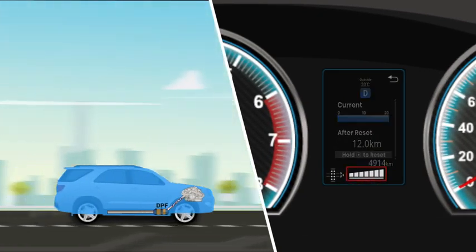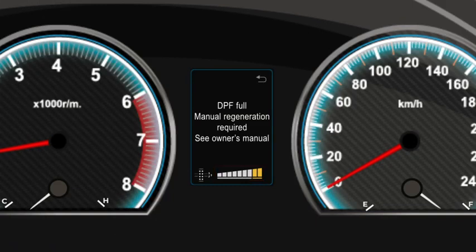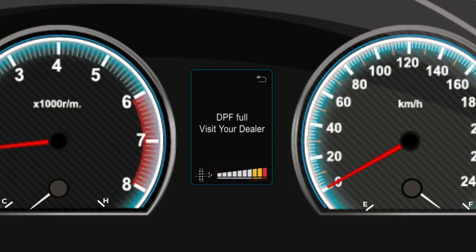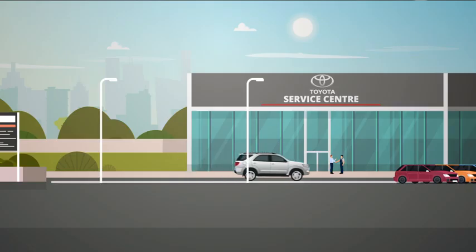If the number of lines displayed is between 7 and 9, manual regeneration might be required. If all 10 lines are highlighted, have your car immediately inspected at the nearest Toyota dealer.